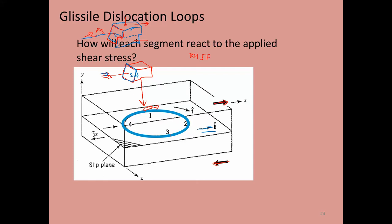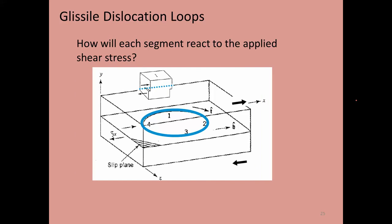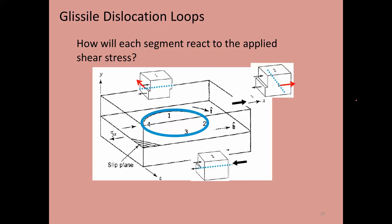By working through this process, I've essentially figured out that in response to this shear stress, this segment of dislocation wants to move outwards from the center of the circle. If you work this through for all the different volumes, each dislocation wants to move outward — including the screw dislocation on this side.